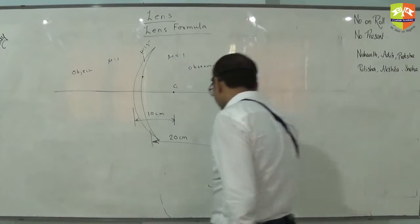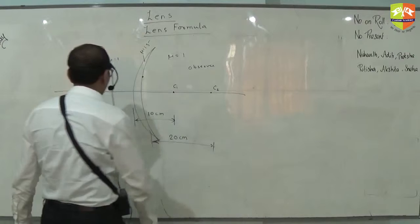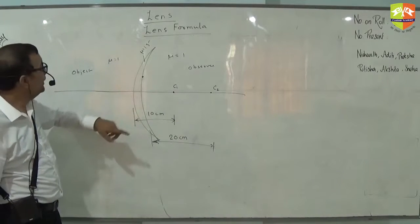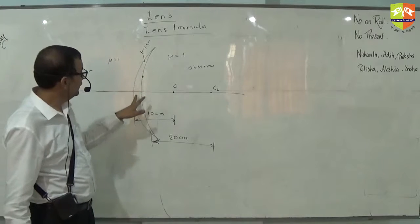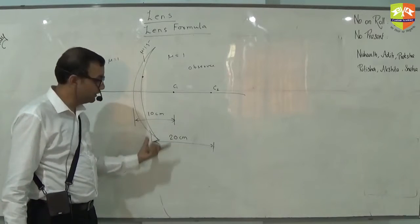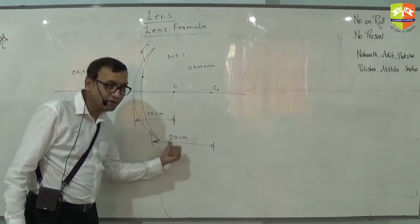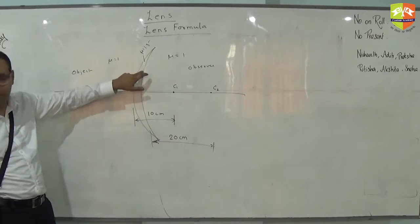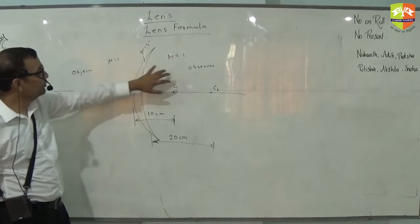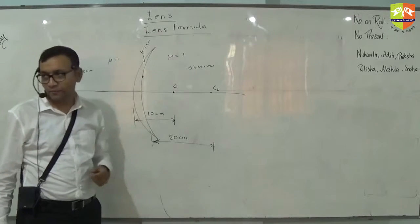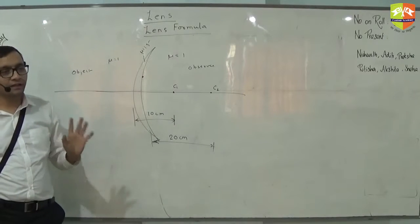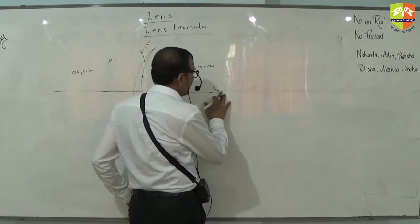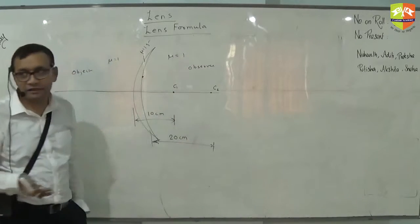Okay guys, for the benefit of those seeing the video, we have this scenario. This is a lens with first radius of curvature as 10 centimeter, second radius of curvature as 20 centimeter. Refractive index of the material of the lens is 1.5 and surrounding has refractive index of 1. We need to find focal length of this lens.